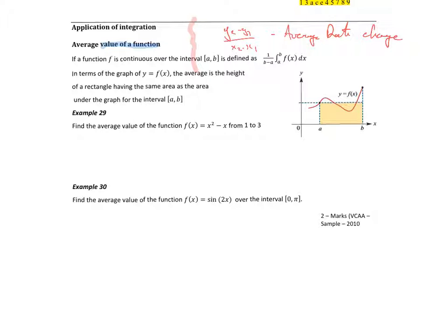If we look at this graph on the right, the value of the function starts at a and finishes up at b. The average value relates to the area under the curve. Formally, the average value of the function over the interval a to b is given by the integral from a to b of f(x) dx, multiplied by 1 over b minus a.